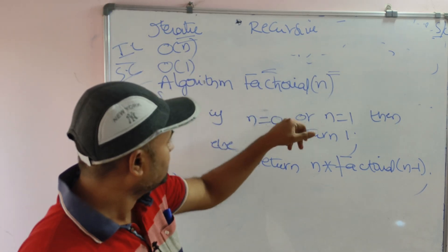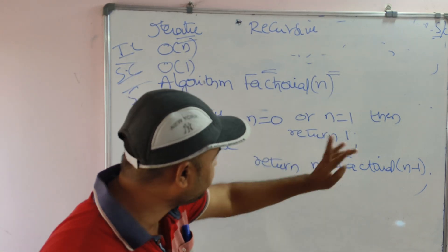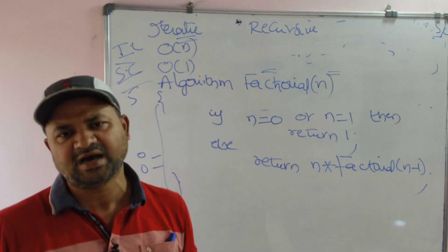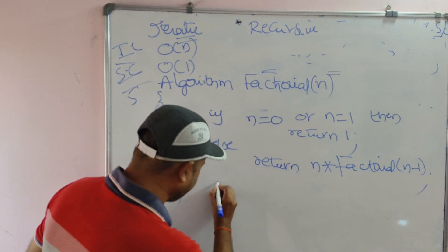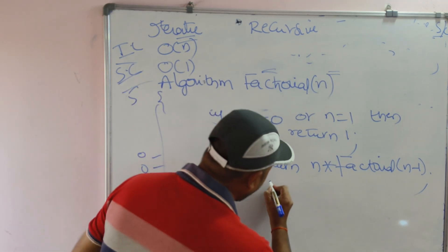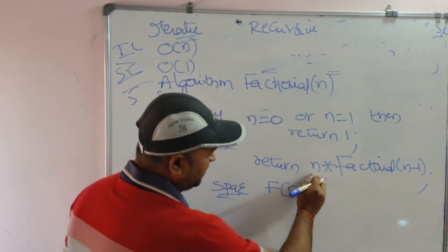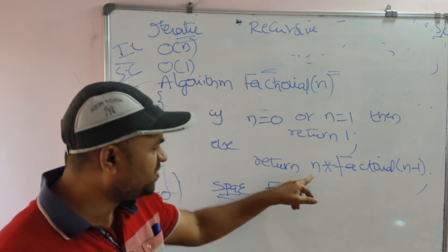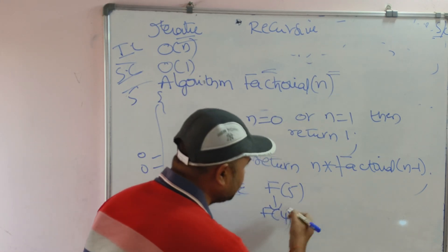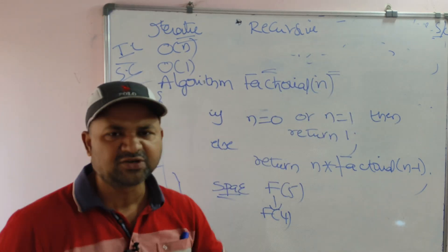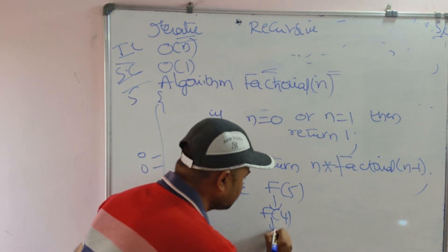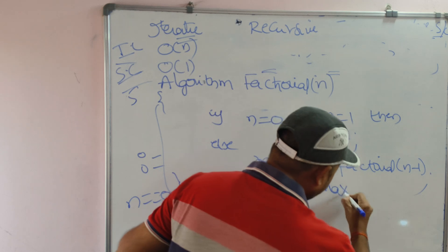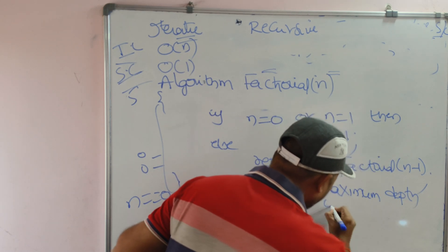Now let us calculate the space complexity first. If we call factorial(5), then since 5 ≠ 0 and 5 ≠ 1, the else block executes: 5 * factorial(4). Then factorial(4) is called, which calls factorial(3), then factorial(2), then factorial(1). The maximum depth of recursion is n. If n = 5, then five functions are called: fact(5), fact(4), fact(3), fact(2), fact(1).